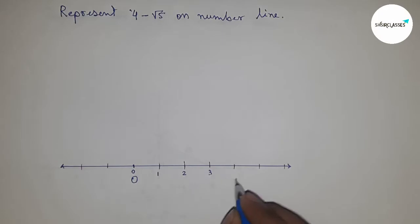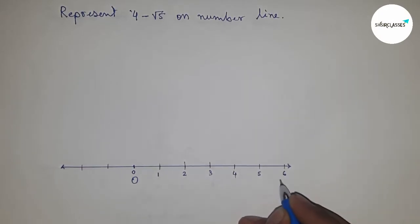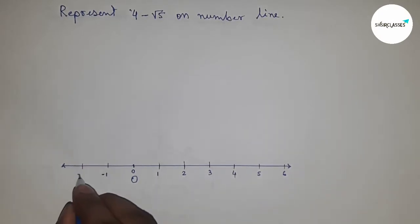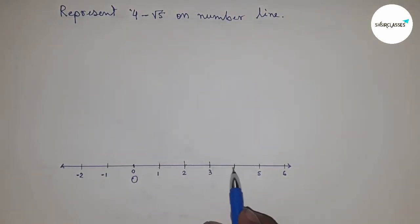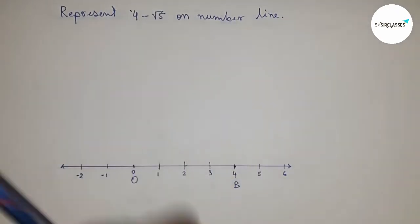This is 1, 2, 3, 4, 5, 6, and on this side minus 1, minus 2, and so on. Next, point out the number 4 on the number line. This is 4 and this is point B.